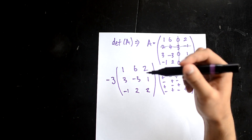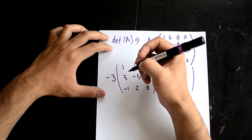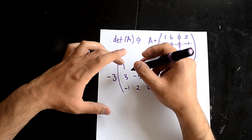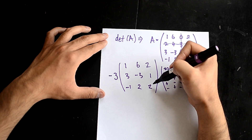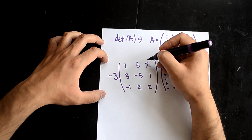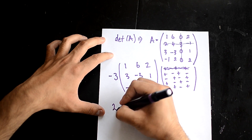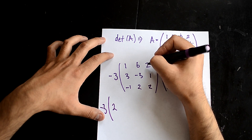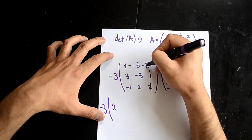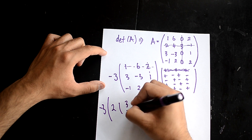Now we're going to transform this 3 by 3 matrix into three sets of 2 by 2 matrices. You can pick any column or any row — it doesn't really matter. I'm going to pick this column here. So I pick this number, 2, and multiply by minus 3. Drawing the line through gives me the 2 by 2 matrix: 3, -3, -1, 2.